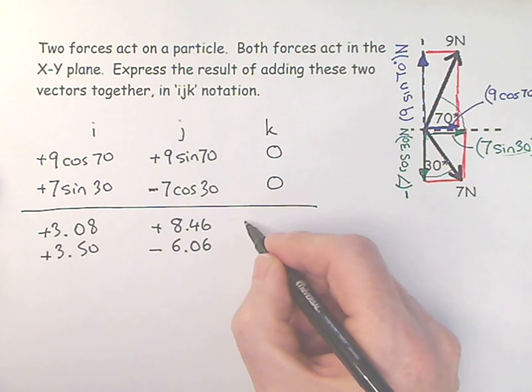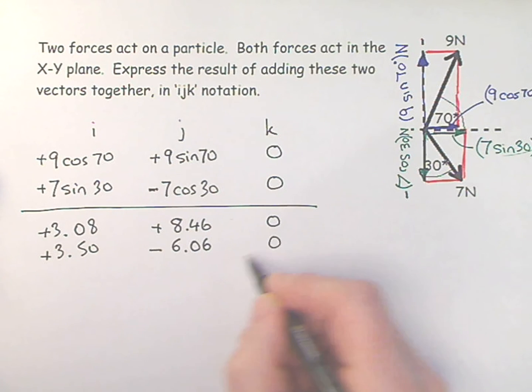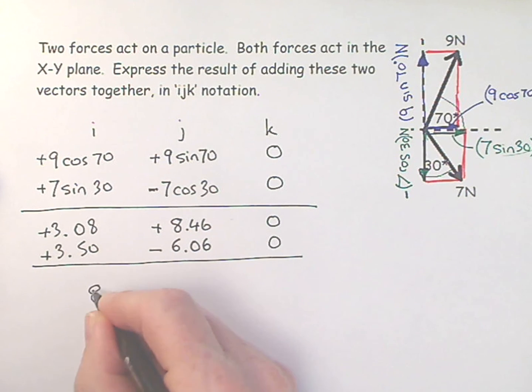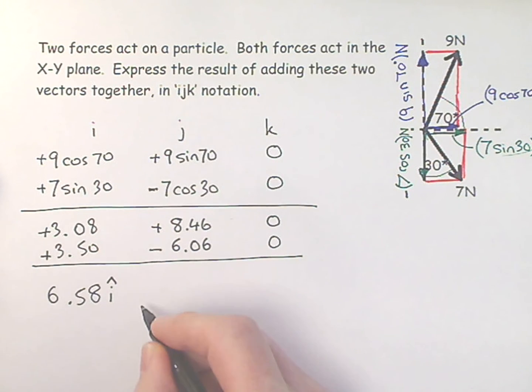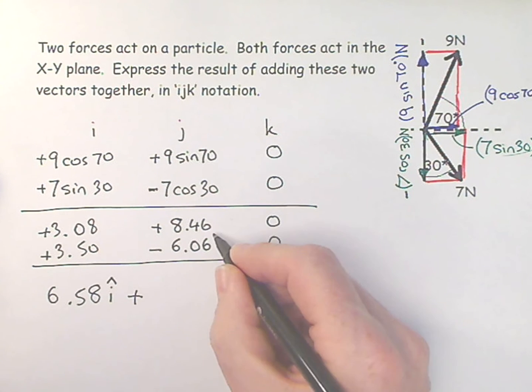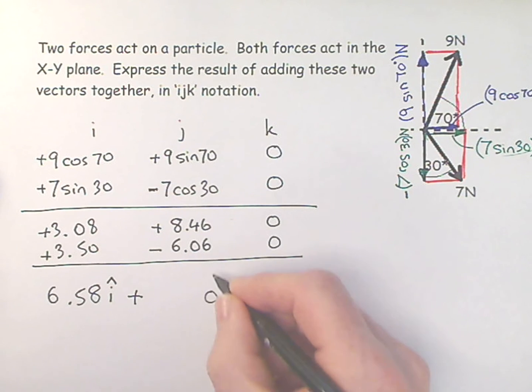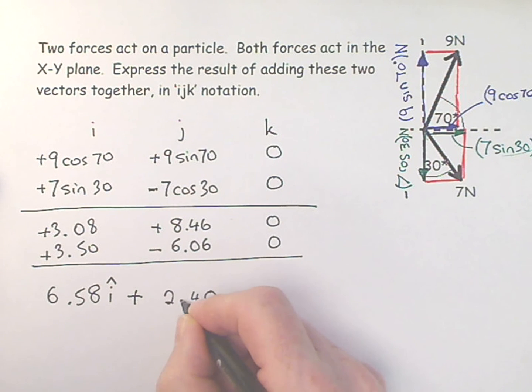You can't not have observation of the diagram. You've got to look at the diagram. So then I add these guys together and I get 6.58, and that is in the x direction. And then on this one, I have 8.46 minus 6.06 which is plus 2.40, and that's j.